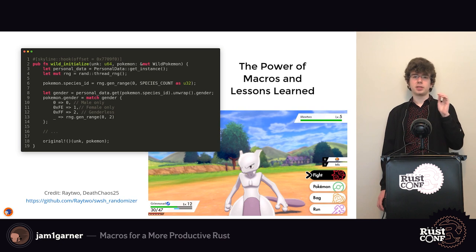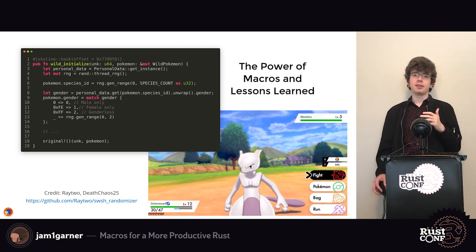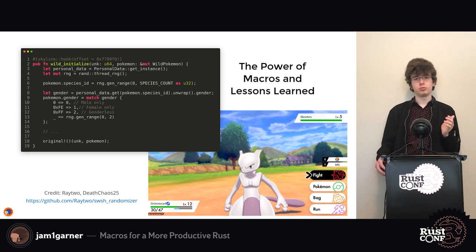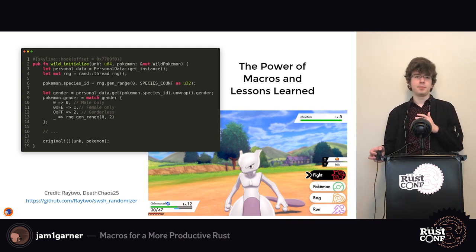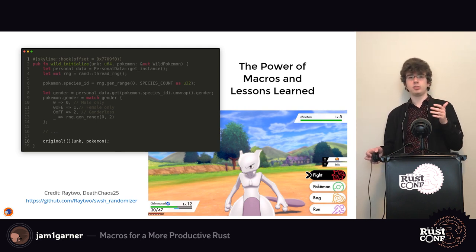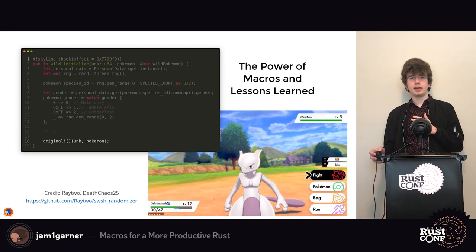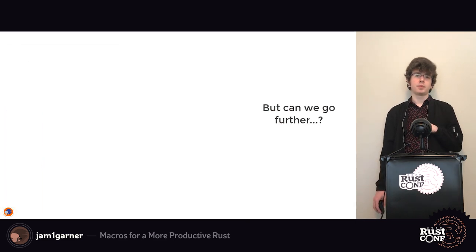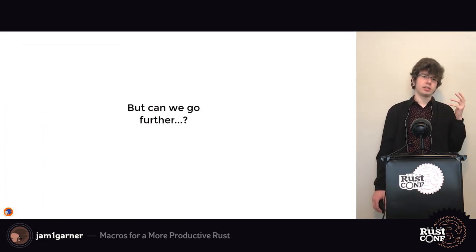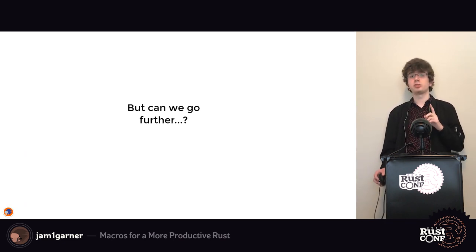Here's an attribute macro I wrote called `skyline-hook`. It lets you replace a function in another binary with your Rust function. You provide a program counter and your function, and it handles code patching in the background, even allowing you to call the original function if you just want to modify some input variables and then defer to it. Someone used this to make a Pokémon randomizer — just a ~50-line function that randomizes some values, with the attribute macro handling all the code patching.